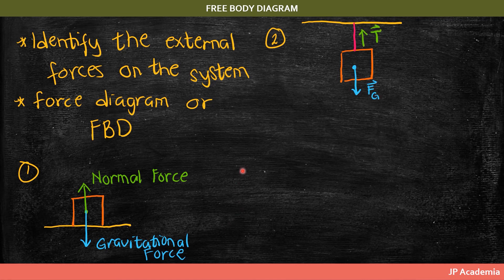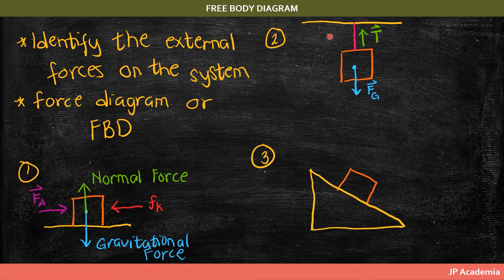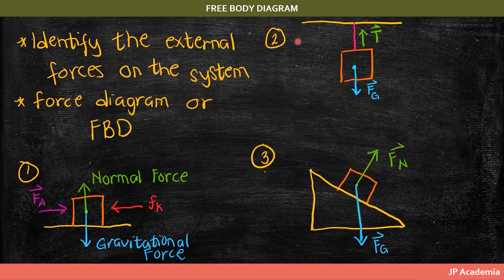Next, a box attached to a rope hanging from a ceiling: we have a downward gravitational force (weight) and an upward tension force due to the rope. Then, using the first illustration, if an applied force pushes the box to the right at constant speed — meaning acceleration is zero along the horizontal — we have the applied force balanced by the friction force, confirming no net acceleration.